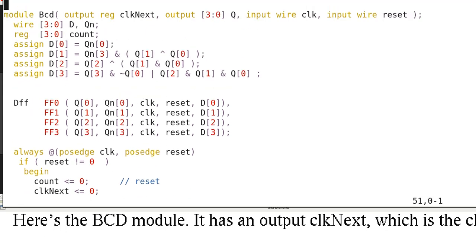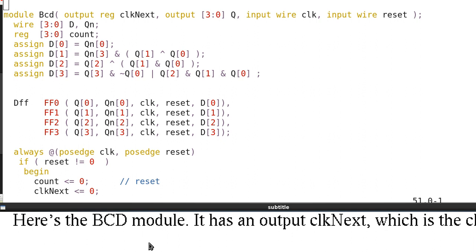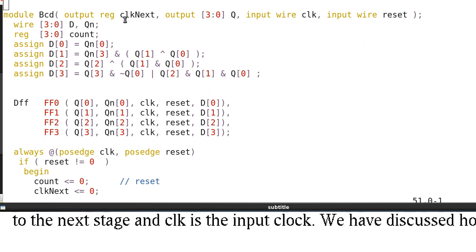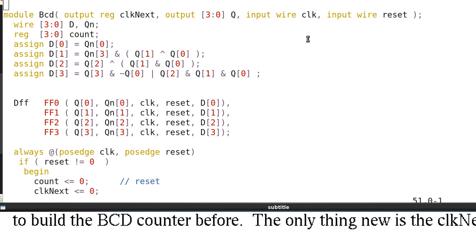Here is the BCD module. It has an output clock next, which is the clock to the next stage, and CLK is the input clock. We have discussed how to build the BCD counter before. The only thing new here is clock next.